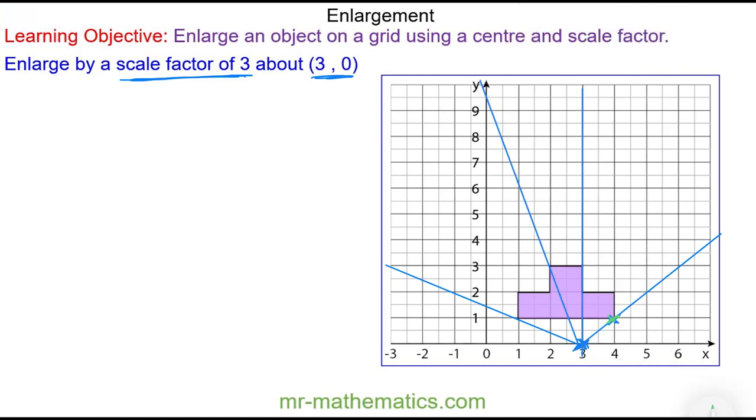Okay so now I'm going to find the position of this vertex when it's enlarged by a scale factor of 3. So I'll go one across and one up. But I'm going to do that three times. So that's two times. And that's three times. Then this vertex at (4,1) is enlarged to the coordinate (6,3).